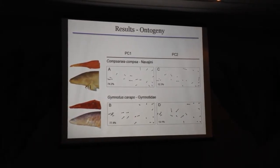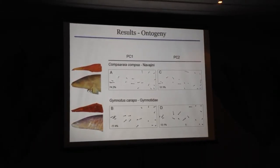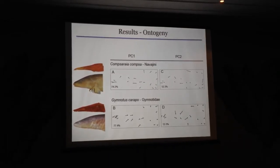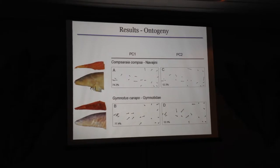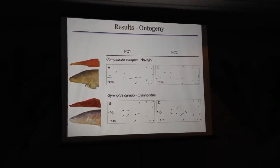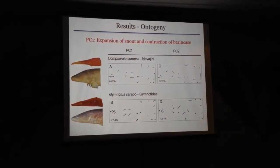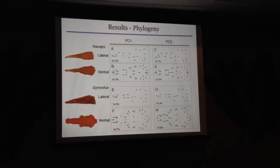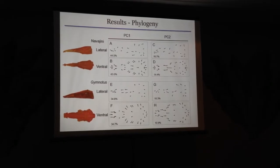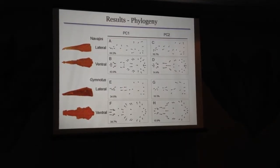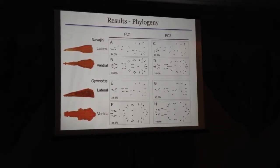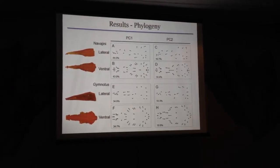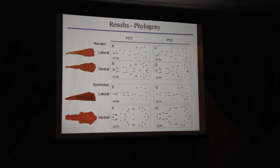Here are the results looking at ontogeny — Campsarion on top. Notice PC1 on the left and PC2 on the right. You can see that PC1 is dominated by this expansion of the snout and contraction of the braincase. Here are the results of the inter-specific comparisons within the Navahini and within Gymnotus — and again, PC1 is dominated by the same patterns: expansion of the snout and contraction of the braincase.